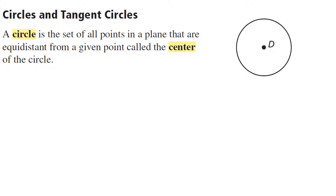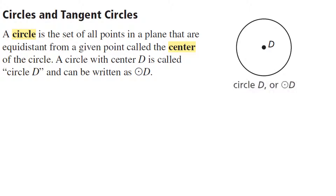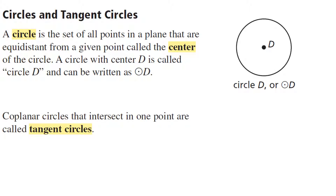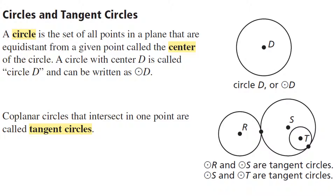So first things first: what is a circle? There's your formal definition. Notice that the center is not actually part of the circle — the center helps us figure out where it's located or what its name is. But the circle is actually that ring of points that are all the same distance from the center. In words we can call it circle D, or we can of course use that symbol. We're going to be interested in two-dimensional Euclidean geometry, so whenever you see the word coplanar it just reminds you that we're two-dimensional — everything will be in the same plane.